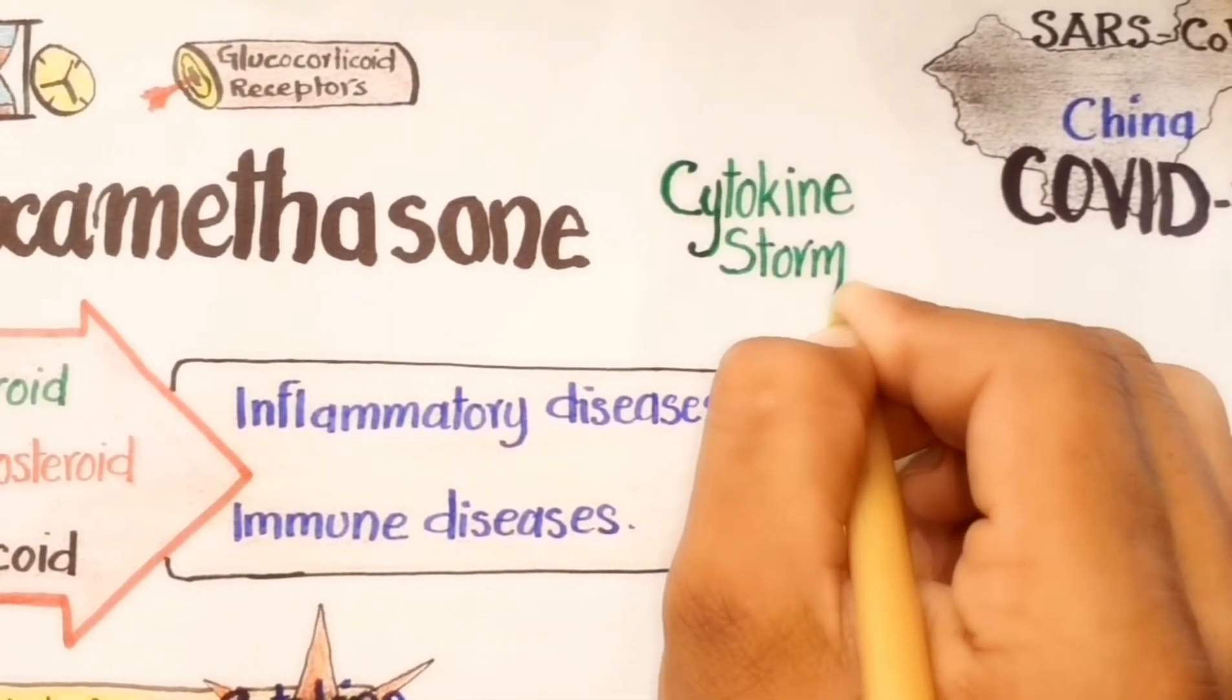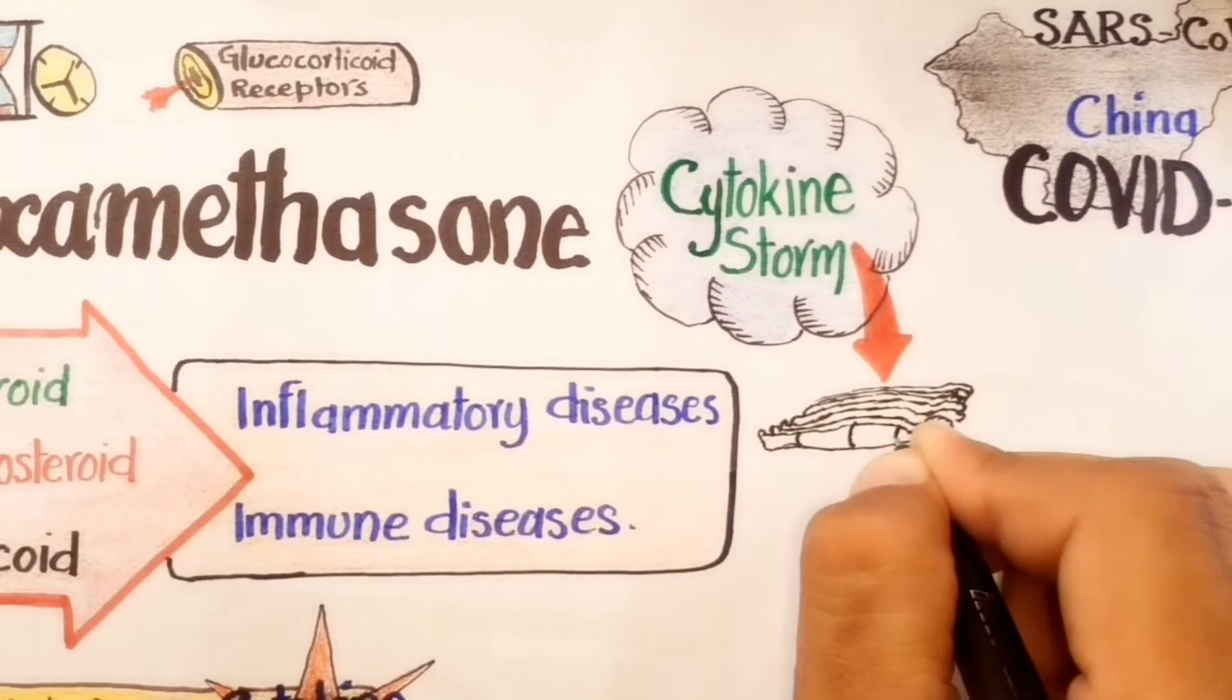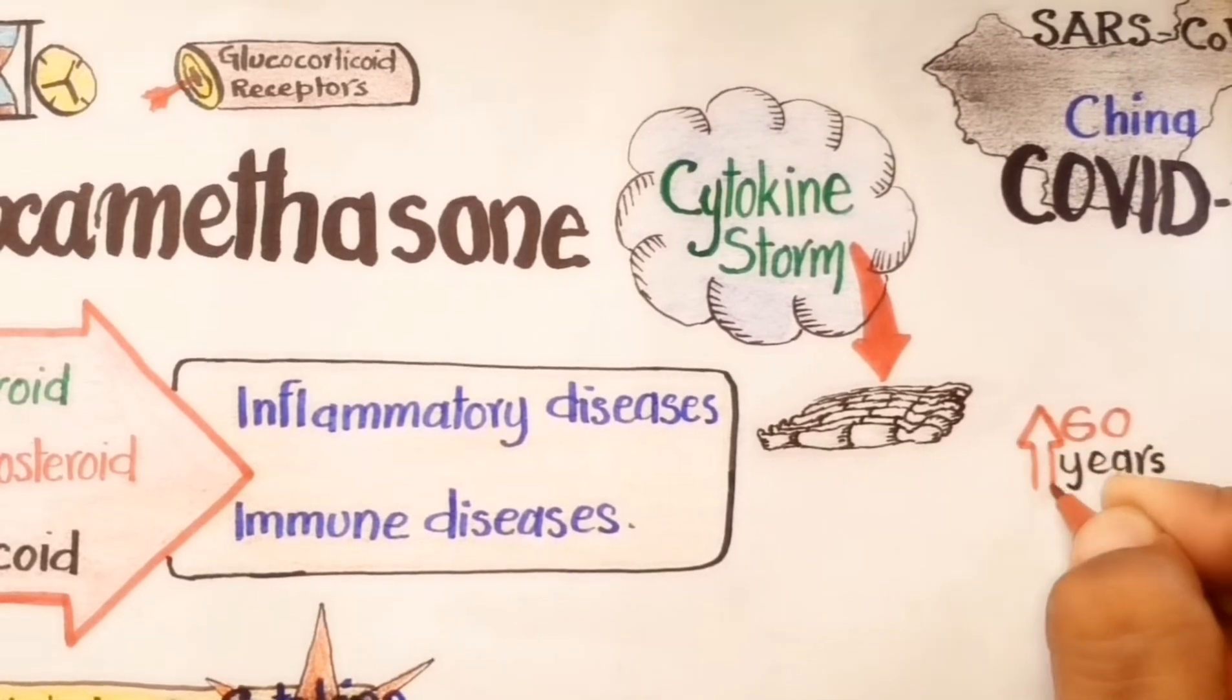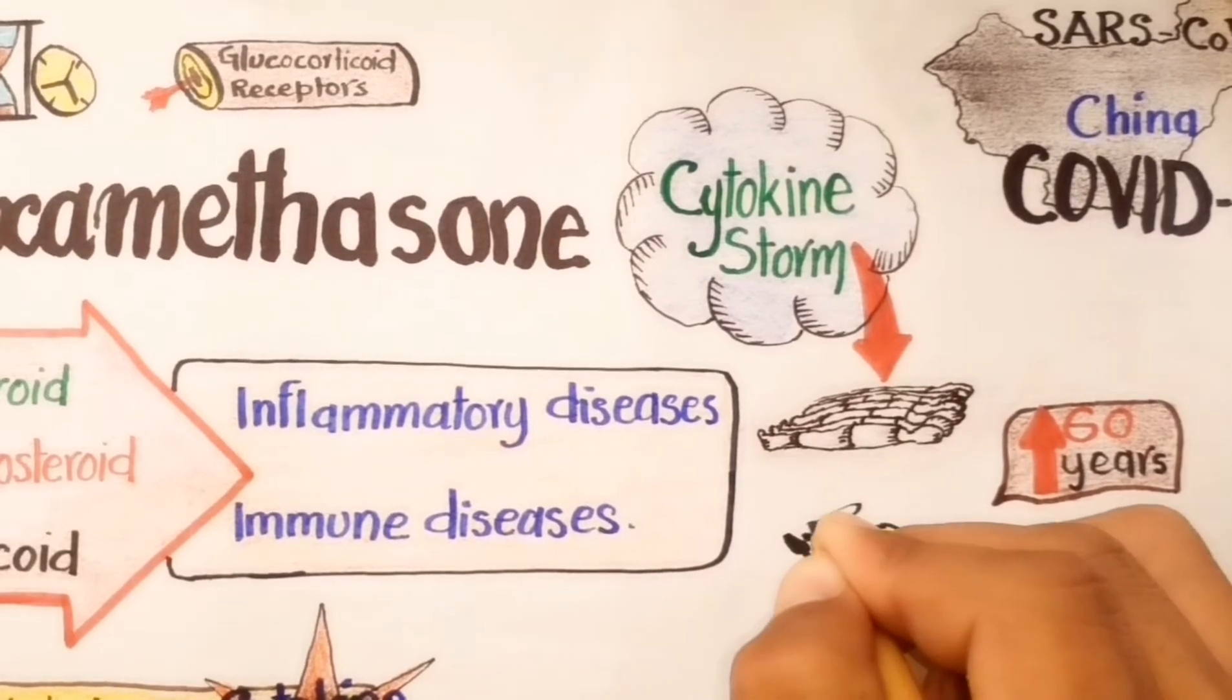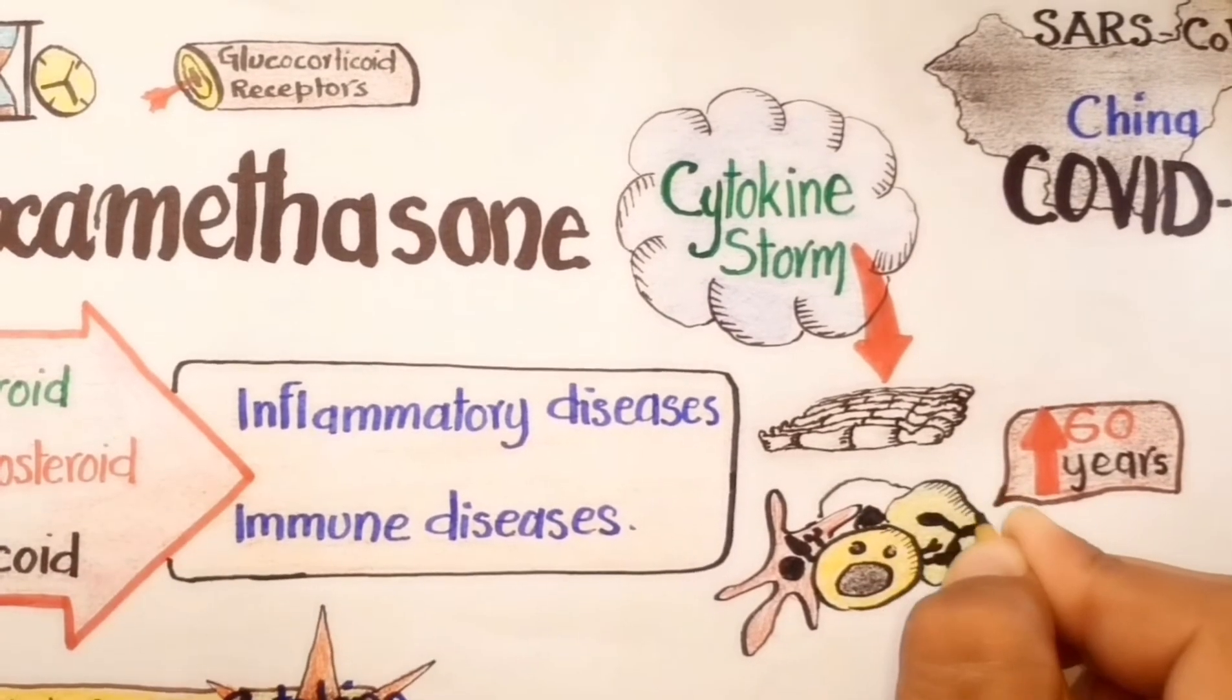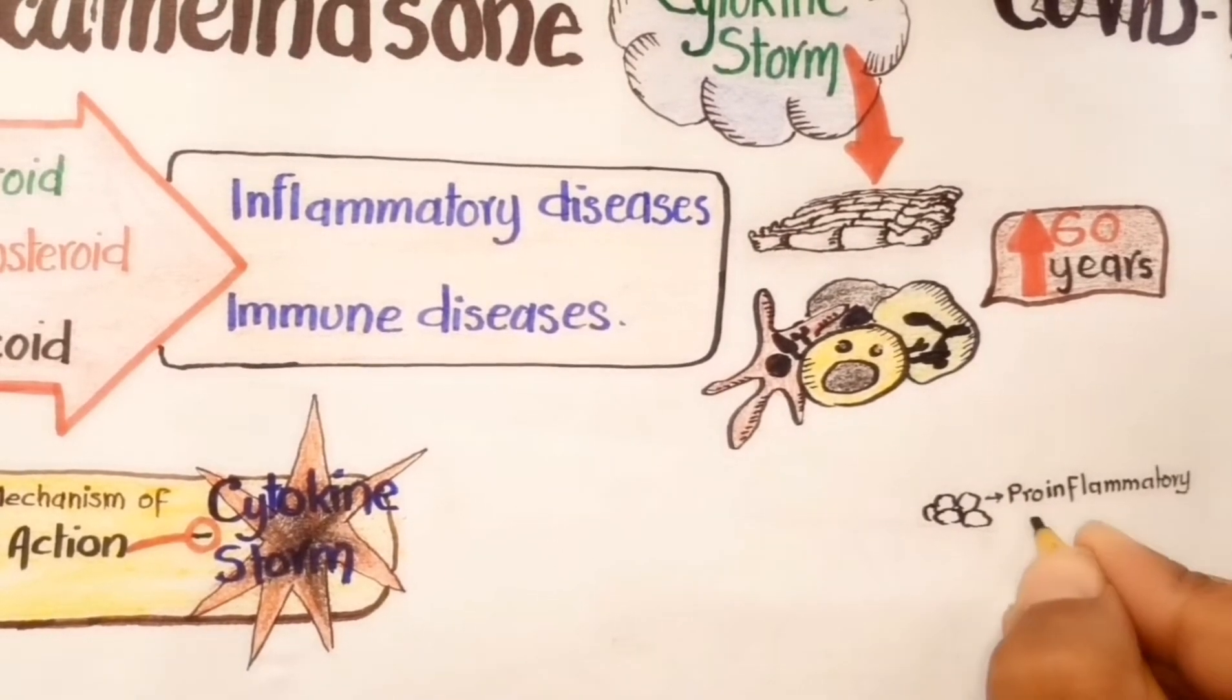Cytokine storm is responsible for many deaths in older patients. Patients above 60 are more susceptible to cytokine storm because immune systems of aged patients are not strong enough as young ones and fail to keep balance between pro-inflammatory and anti-inflammatory cytokines.